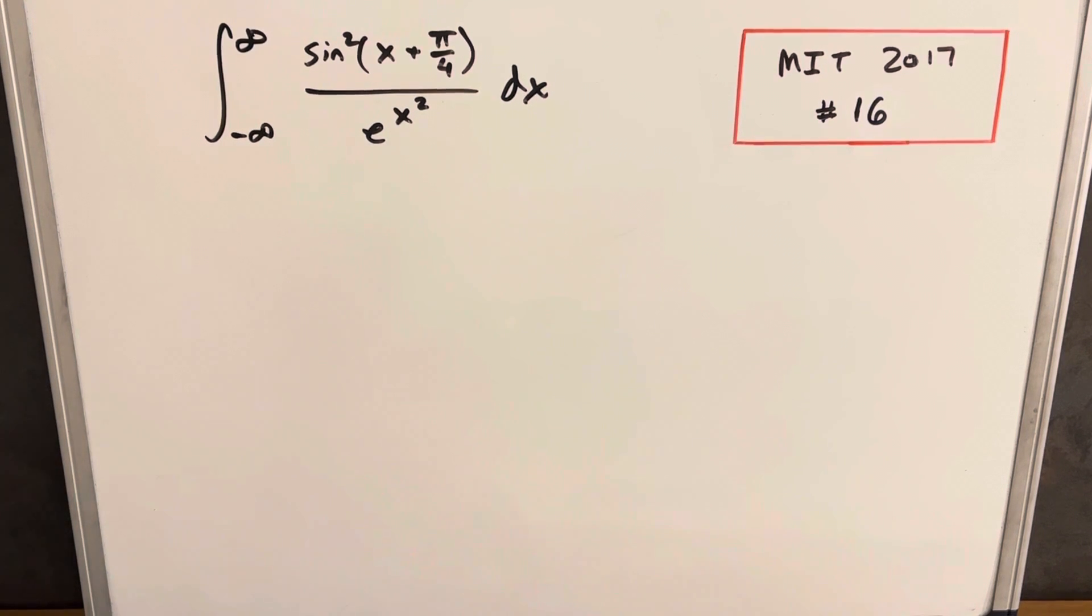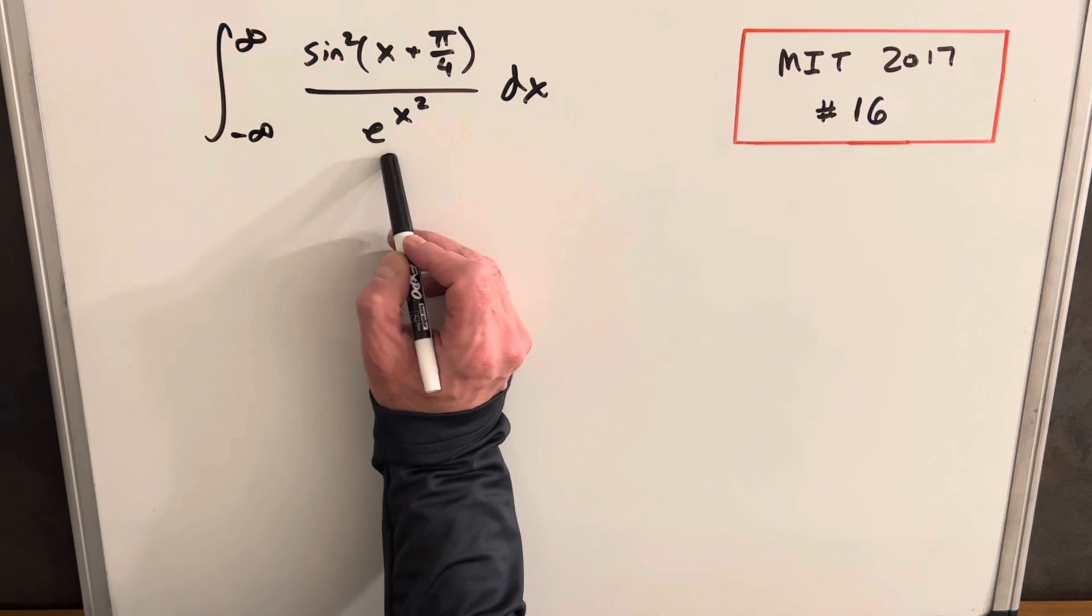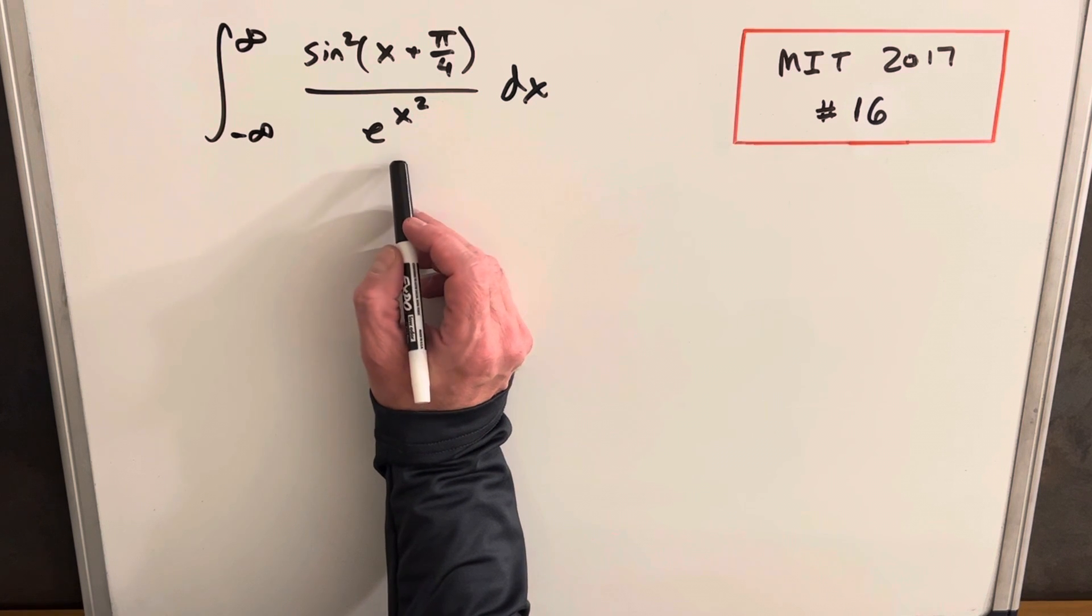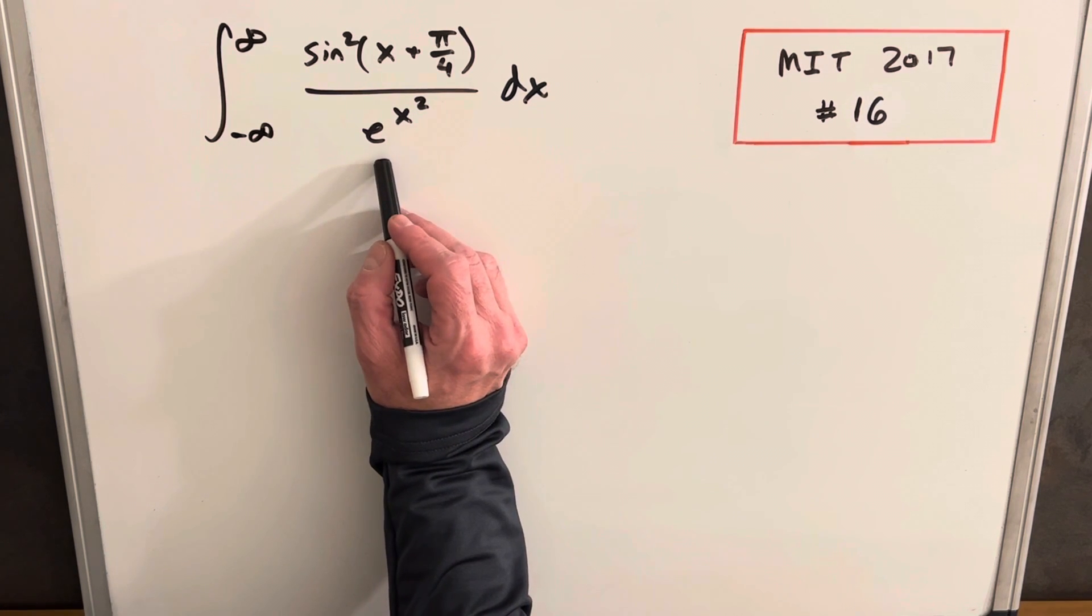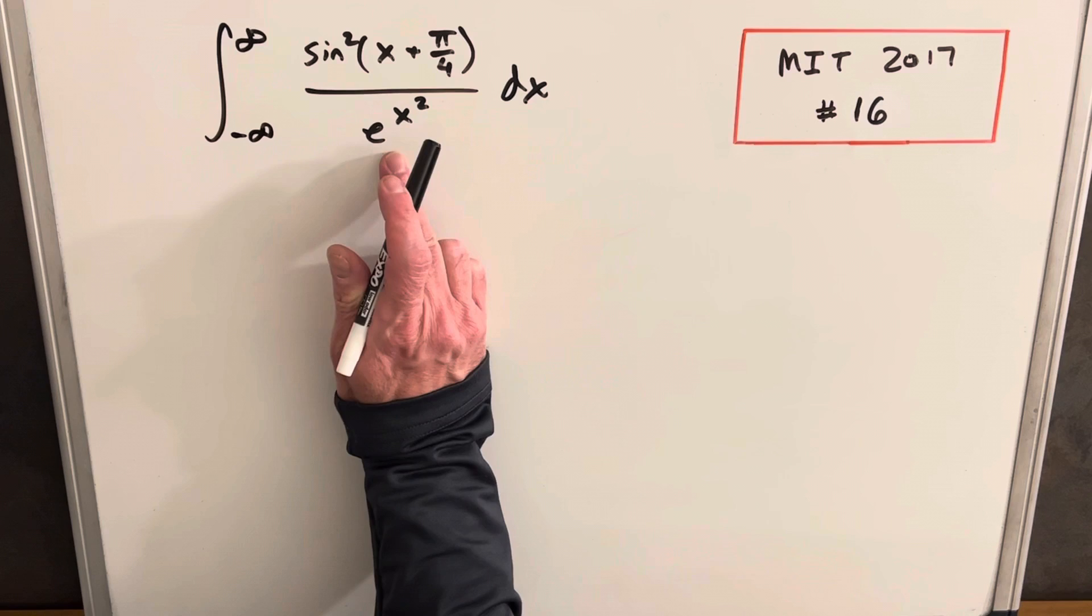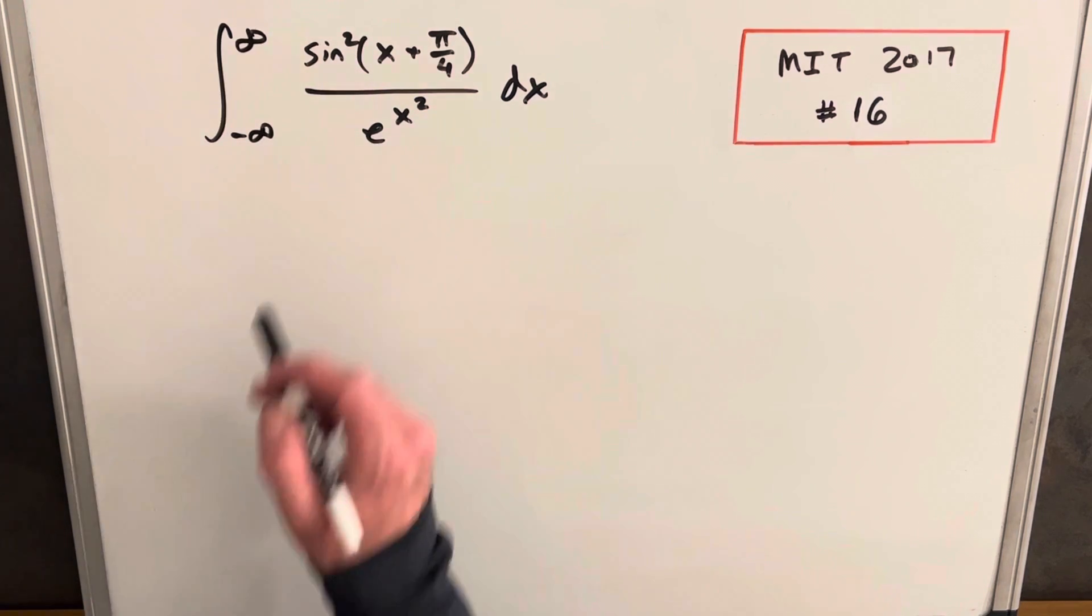Hey, we have another integral on the board from the MIT Integration B 2017, problem number 16. A couple interesting things here: whenever I see e to the x squared, this makes me think of the Gaussian integral. But the problem is we need this alone and we get this other stuff that looks pretty complicated in the numerator.